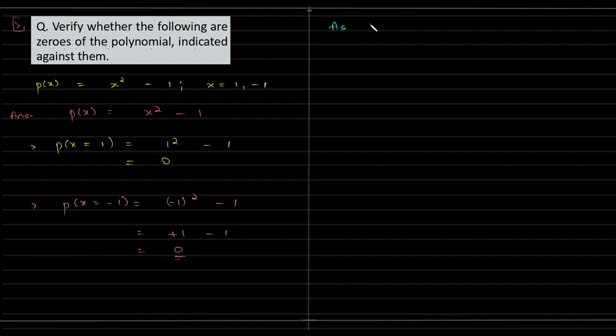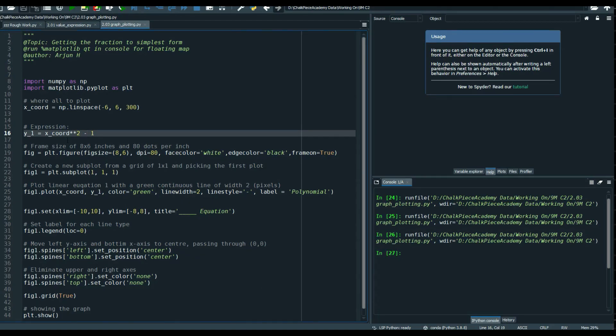In both of these cases we are getting the output to be zero. So we can tell p(1) and p(-1) are both equal to zero. This implies x equal to 1 and minus 1 are zeros of p(x).